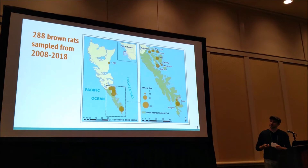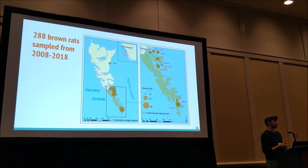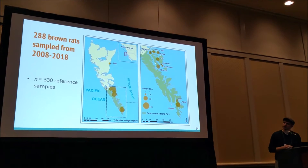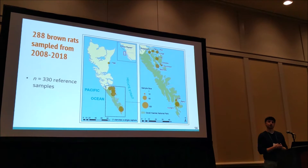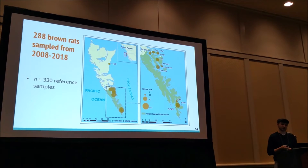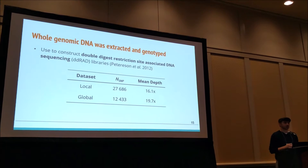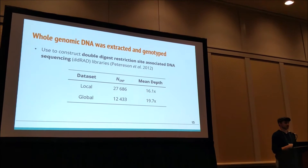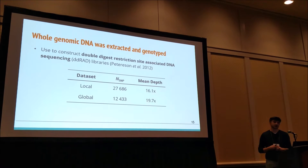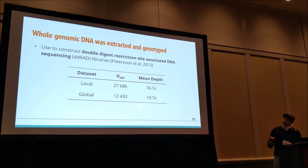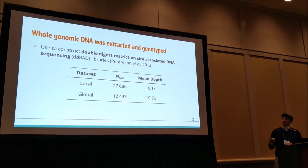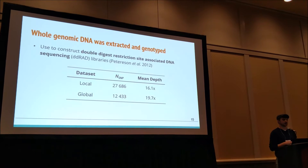To achieve this, we sampled rats from across the archipelago, and we also included genotypic data from 330 reference samples across the global rat distribution, provided by Fordham University. We extracted whole genomic DNA and genotyped this using ddRAD sequencing. We ended up with about 28,000 SNPs for the local level analyses, and for the global origins question we had about 12,000 SNPs.